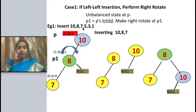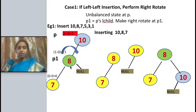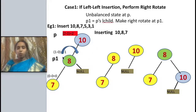Let us see an example. We have to insert 10, 8, 7, 5, 3, and 1. First I will insert 10 — there is no imbalance condition. Now inserting 8: the balance factor will be 0 for node 8 and 1 for node 10, so no problem.